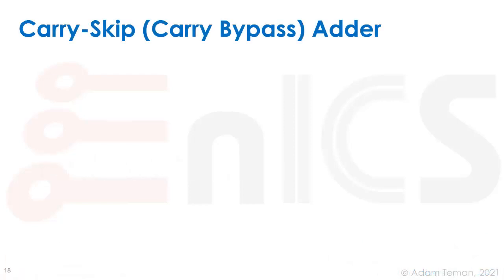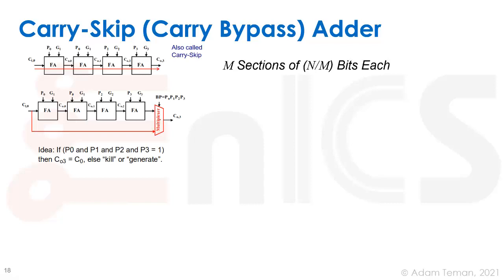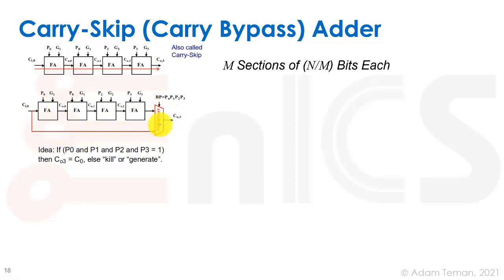The first idea is what we call a carry skip or carry bypass adder. We take a ripple carry adder and add a multiplexer at the end of it. If everything in the block was a propagate, we should have just propagated the initial carry-in to the output of that block — in this case four bits.